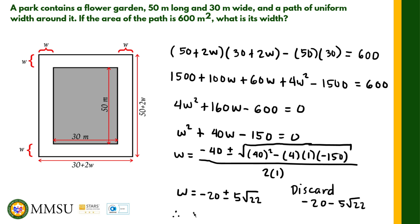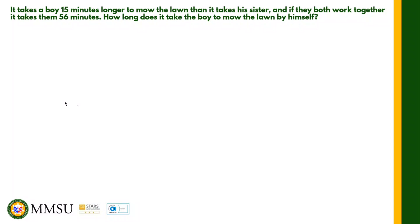Therefore, the width is equal to negative 20 plus 5 times the square root of 22, which using a calculator is approximately 3.45 meters. So 3.45 meters is our answer for this problem. Let us take a look at another problem — a work problem. It takes a boy 15 minutes longer to mow the lawn than it takes his sister.